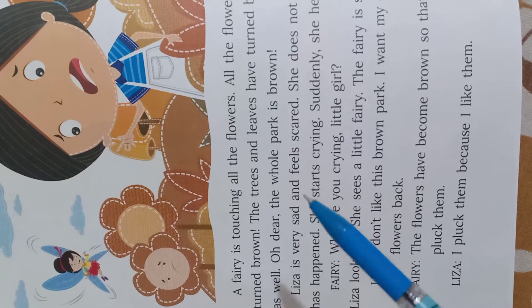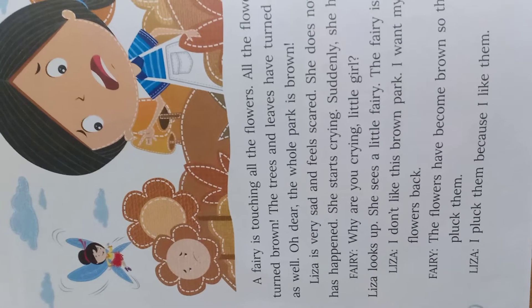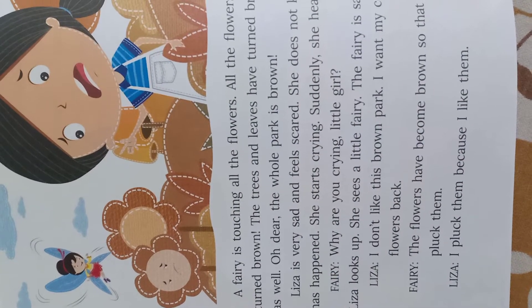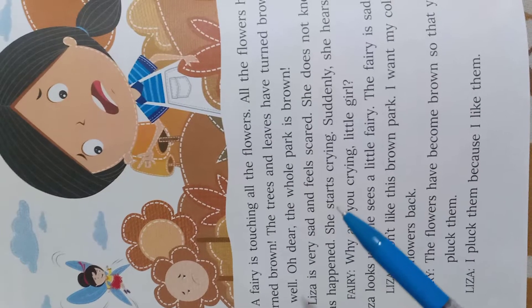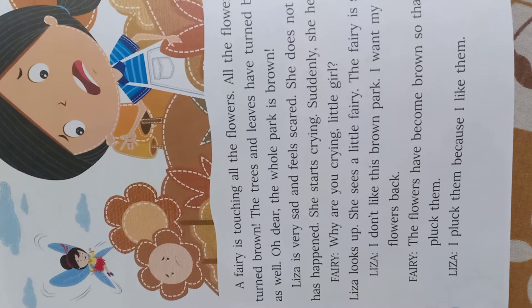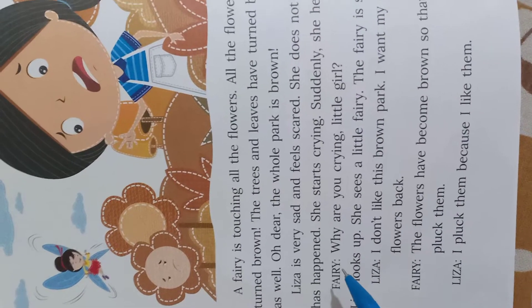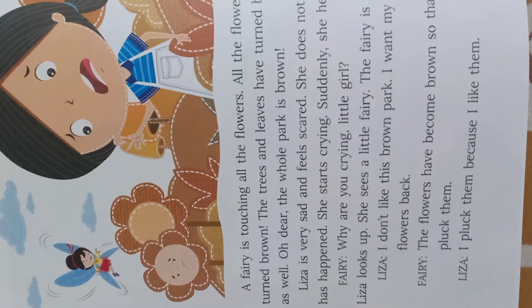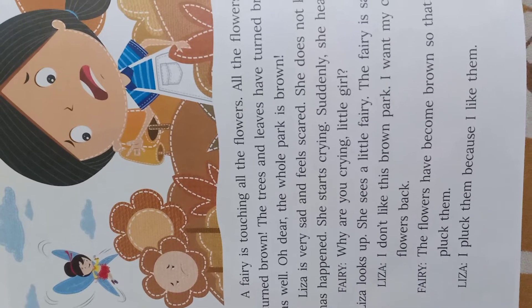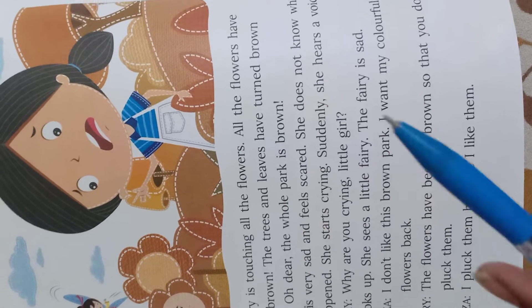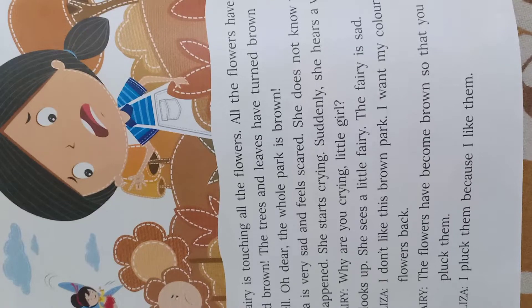Lisa is very sad and feels scared — अब Lisa बहुत ज़्यादा उदास और डरा हुआ महसूस करने लगी। She does not know what has happened — उसे पता ही नहीं चल रहा था कि आखिर हो क्या रहा है। She starts crying — उसने वहीं पर रोना शुरू कर दिया। Suddenly she hears a voice — अचानक उसे एक आवाज़ सुनाई दी — वो आवाज़ Fairy की थी। Fairy says: 'Why are you crying, little girl?' — उस परी ने उससे कहा कि छोटी बच्ची, तुम रो क्यों रही हो? Lisa looks up and sees a little fairy — Leesa ने ऊपर उठकर देखा, उसने देखा कि वो एक छोटी सी परी थी। The fairy is also sad — और जो परी थी, वो भी बहुत ज़्यादा उदास थी।